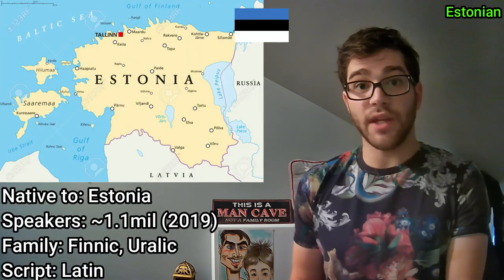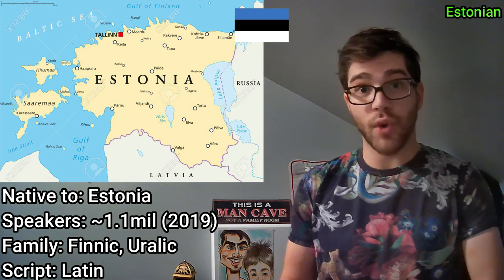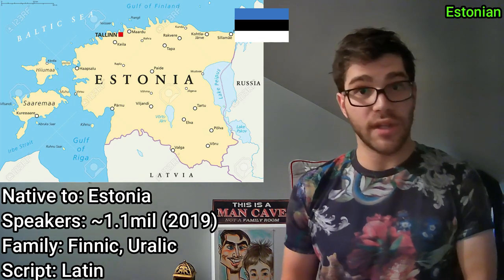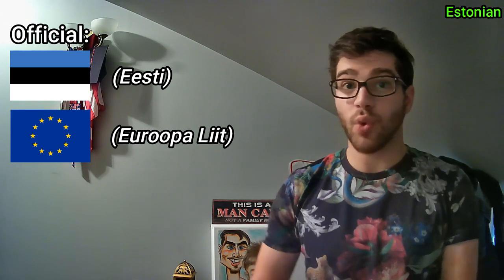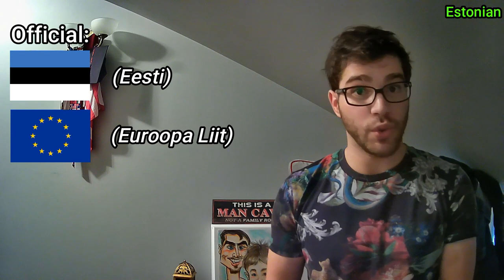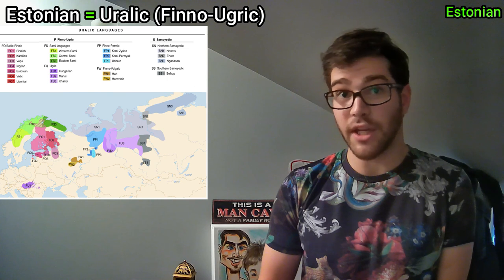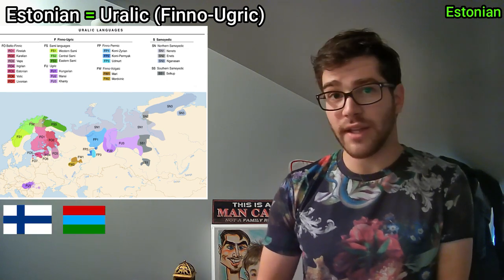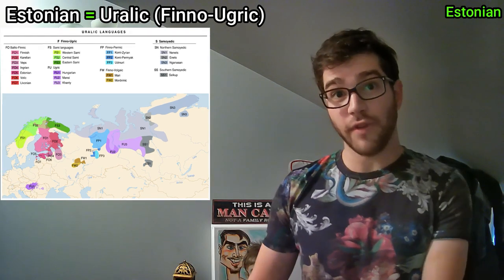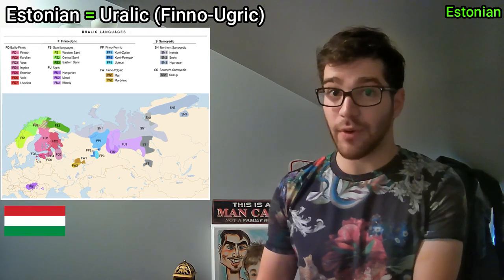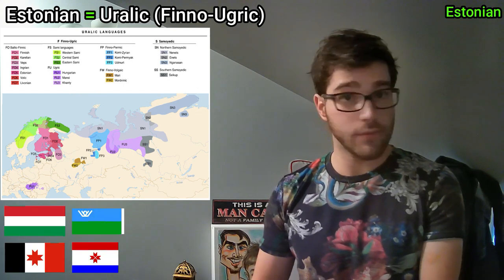Back to the matter at hand: Estonian is native to Estonia, spoken by about 1.1 million people. It's part of the Finnic branch of the Uralic language family and is written using the Latin script. Estonian is the sole official language of Estonia, as well as one of the official languages of the European Union. Estonian is not an Indo-European language, but rather part of the Uralic language family, with its closest relatives being Finnish, Karelian, Ingrian, Livonian, and a few other smaller ones like the Sami languages. Also very, very distantly related to Hungarian, and some languages of the Ural region of Russia, like Udmurt, Khanty, and Moksha.